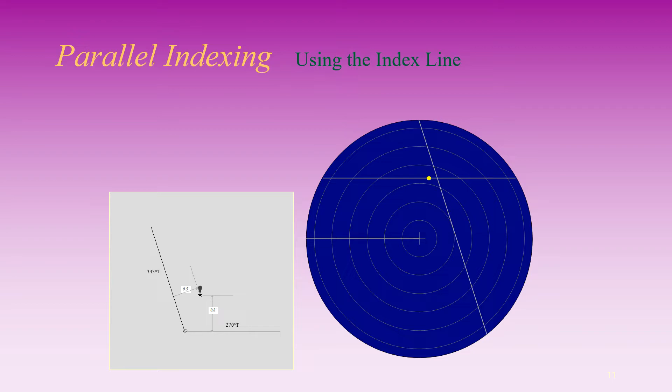On modern radars this is electronically generated on the display. When the range scale is changed, the index lines are shifted accordingly so they still appear at the required distance from the radar origin.